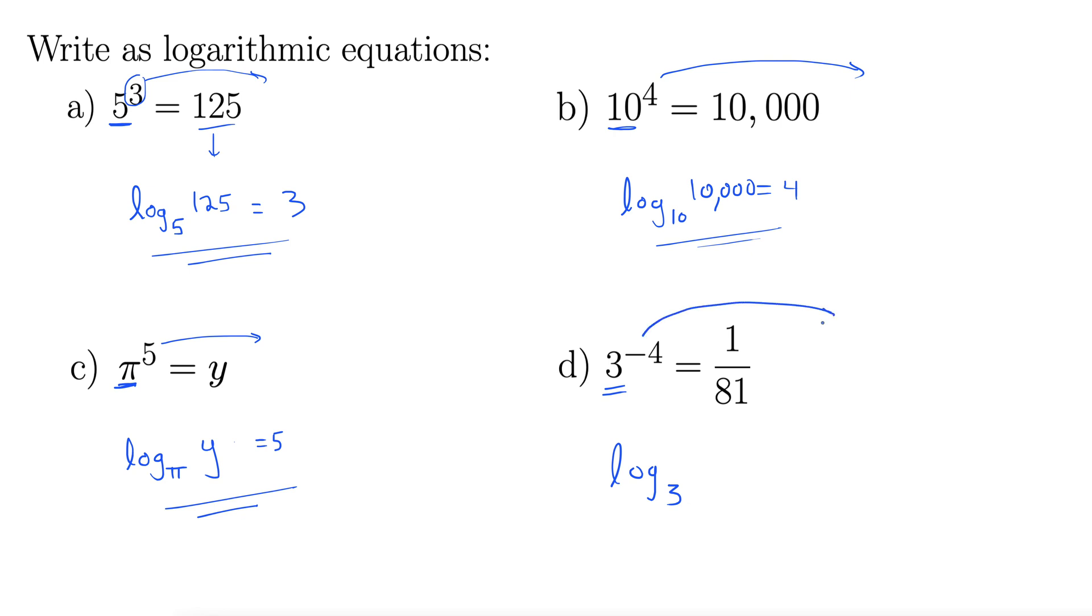Log 3 is the base up top, so 3 will still be the base in our log equation. The negative 4 goes way out here, so equals negative 4. 1 over 81 comes inside. So log base 3 of 1 over 81 equals negative 4.